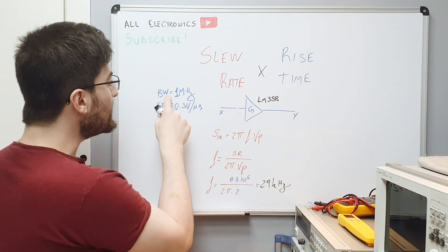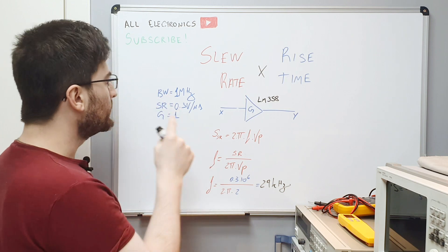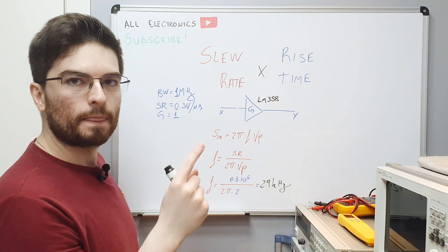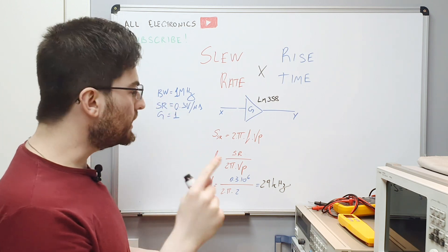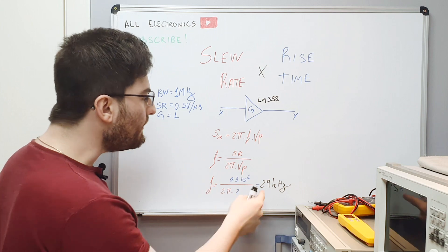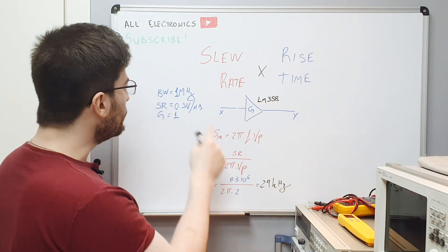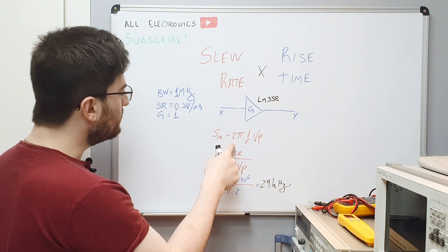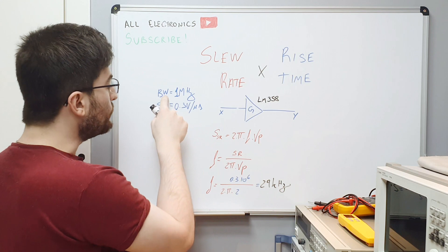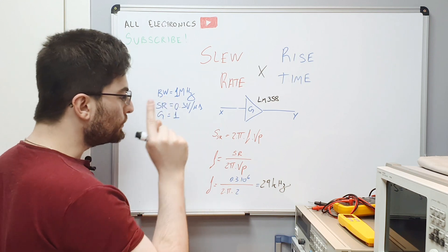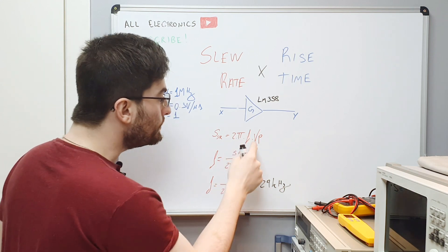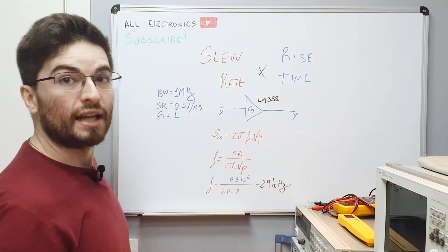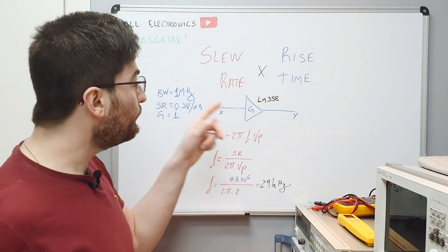So the bound between large signal and small signal here is very distant. We can reverse this formula using 1 MHz to see the maximum volt peak we can use with an LM358.